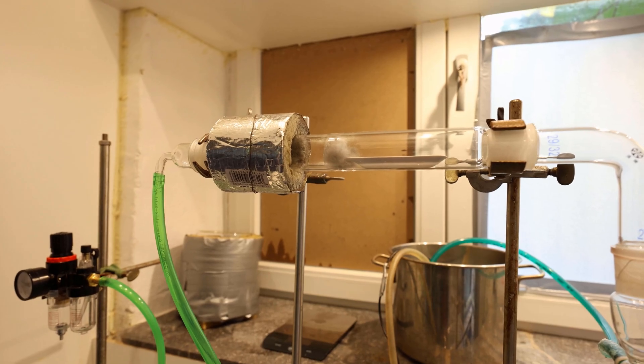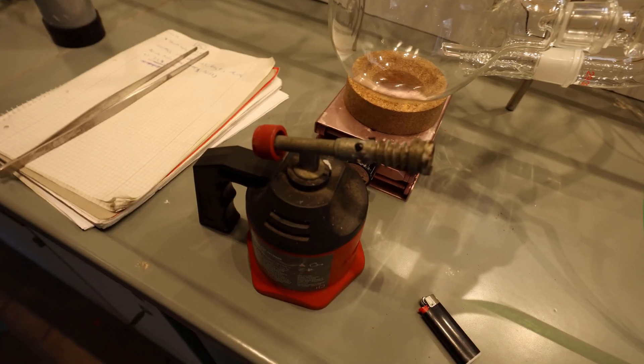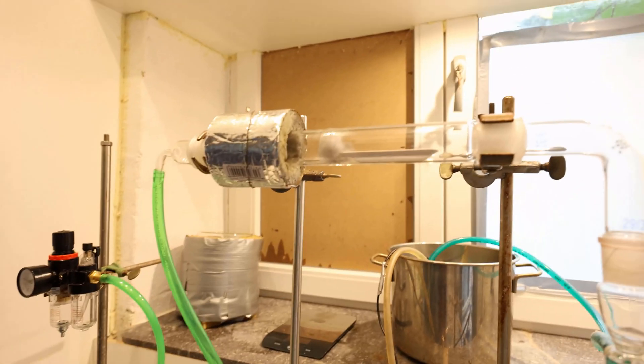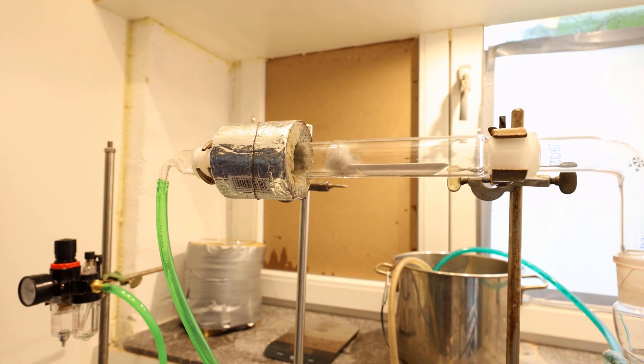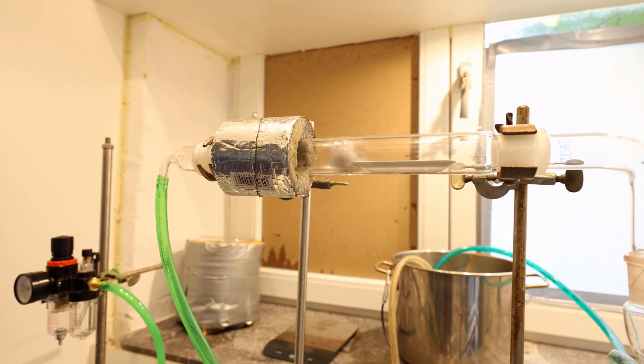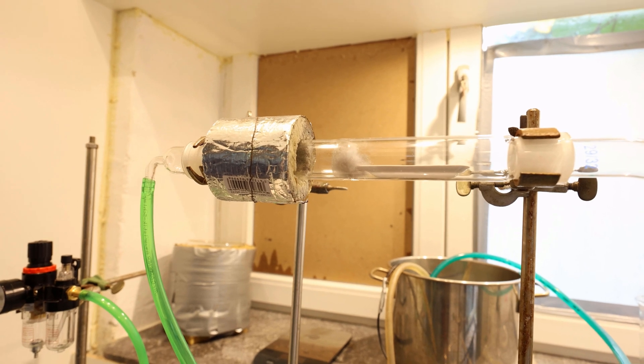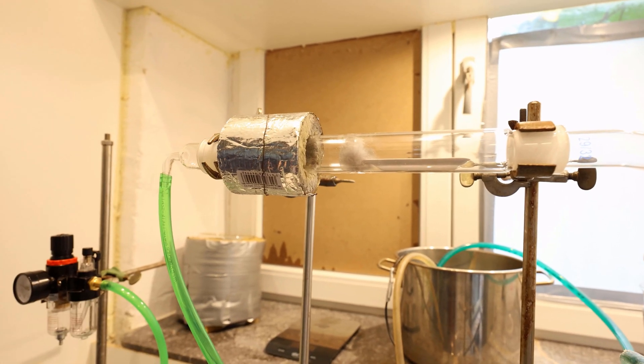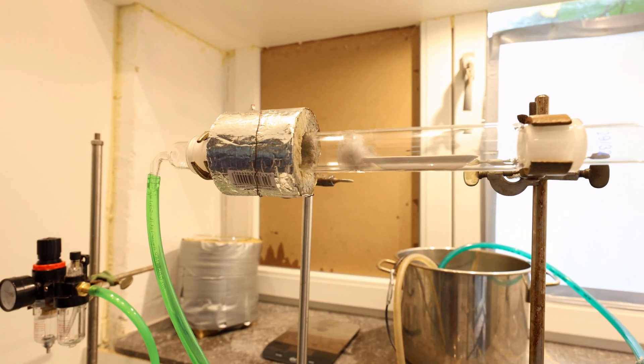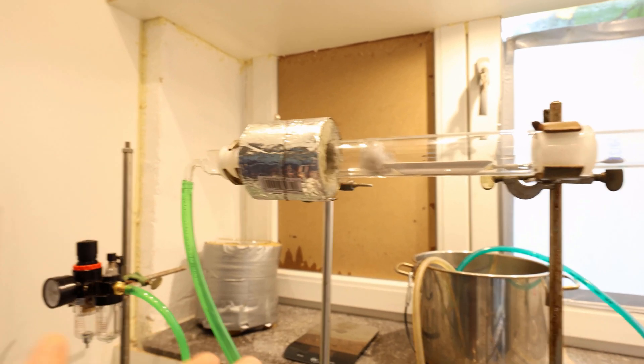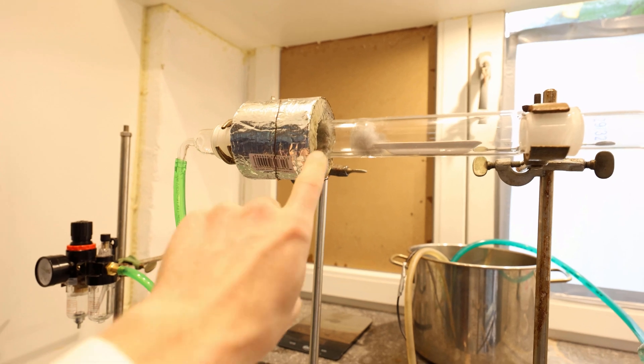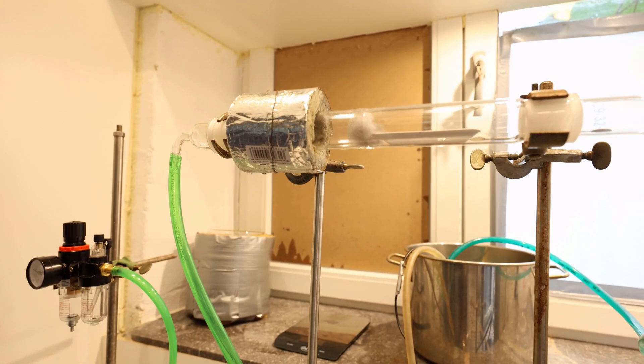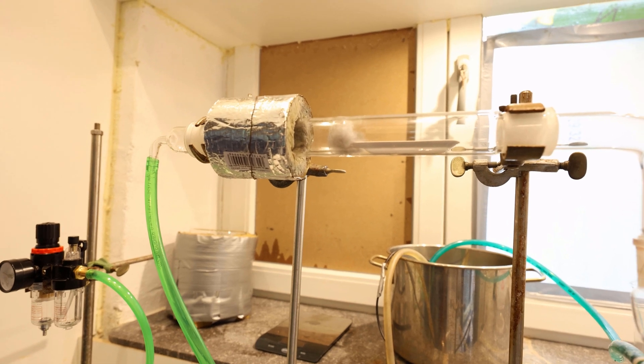All right, we have the catalyst here and we will heat this up with this burner. Then hopefully when it's hot and the ammonia and oxygen is going through there, we will have a self-sustaining catalytic heat conversion. This will keep the catalyst hot and then we can slide this glass wool insulation thing over there to keep it warm.